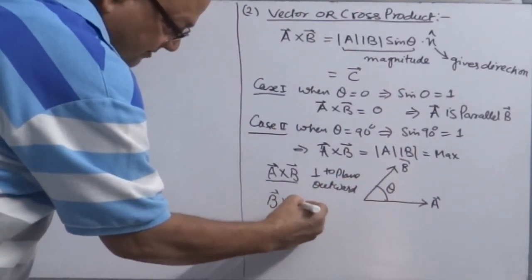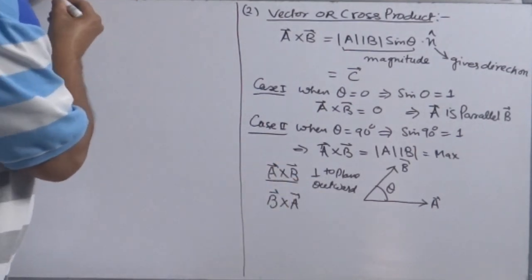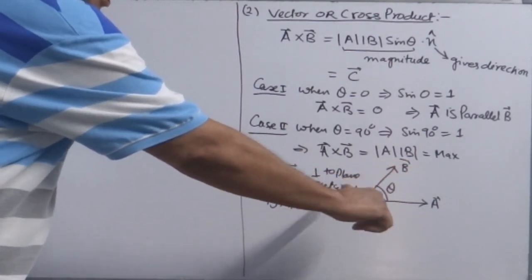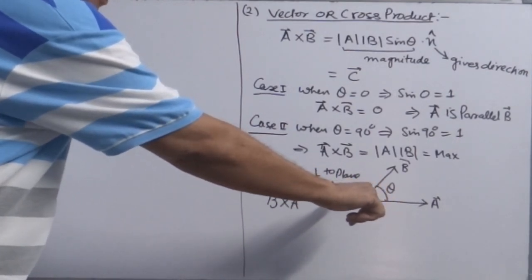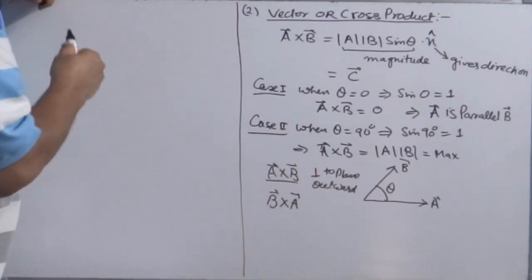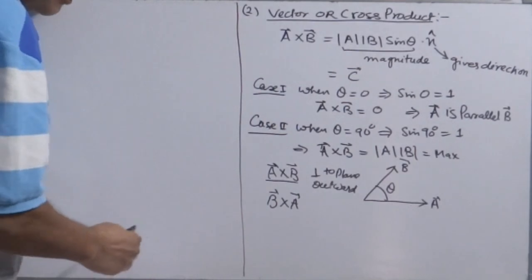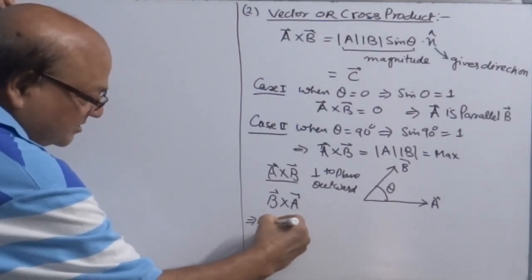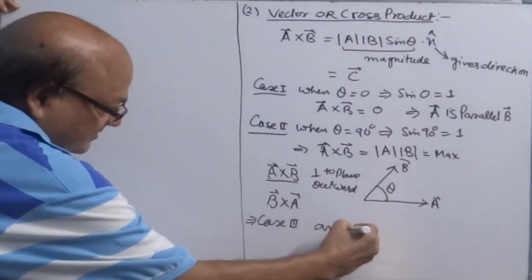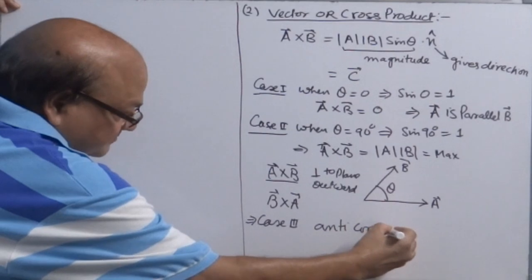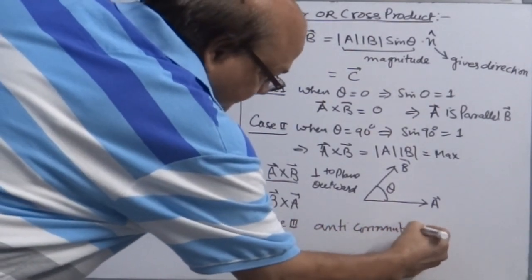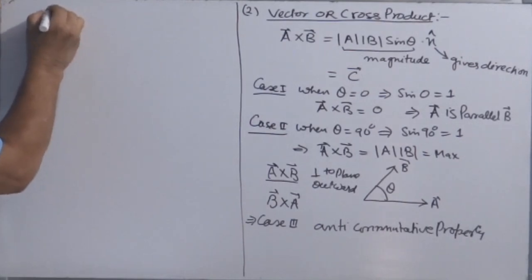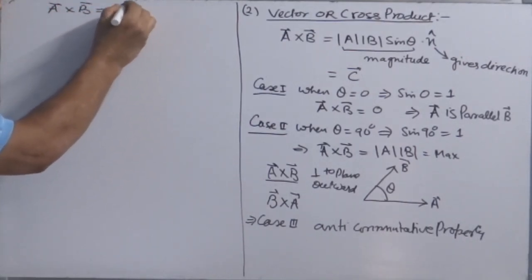If you want to find B cross A, the procedure is the same — now keep your fingers parallel to B and start curling towards vector A. Your thumb direction is inward to the plane of the whiteboard, so vector C will be in the opposite direction, but the magnitudes are the same. This is Case 3: vectors follow the anti-commutative property, that is A cross B is equal to minus B cross A.